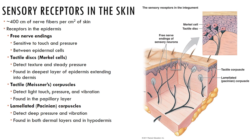There are many sensory receptors in the skin: free nerve endings, Merkel cells, Meissner's corpuscles, and Pacinian corpuscles. Each responds to different types of touch. Free nerve endings are sensitive to touch and pressure and are found between epidermal cells. Merkel cells detect texture and steady pressure and are found a bit deeper in the epidermis. Meissner's corpuscles detect light pressure and are found in the papillary layer. Pacinian corpuscles detect deep pressure and vibration and are found in the lower dermis and hypodermis.